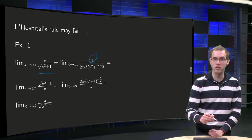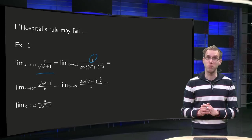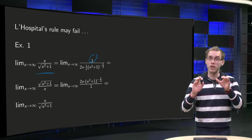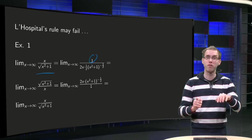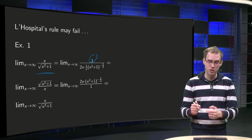Derivative of the numerator, that's easy, it's just 1. Derivative of the denominator gives some rubbish, so the square root of x squared plus 1 gives 1 half, x squared plus 1 to the power minus 1 half, times chain rule 2x.